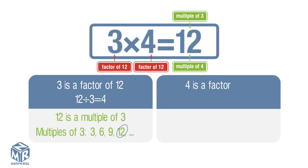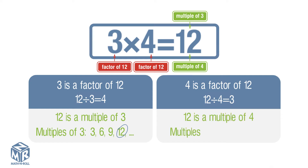4 is a factor of 12 because 12 divided by 4 equals 3 with no remainder. We show that 12 is a multiple of 4 by listing the multiples of 4. We do this by multiplying 4 by numbers like 1, 2, 3, and so on. 12 is on our list, so 12 is a multiple of 4.